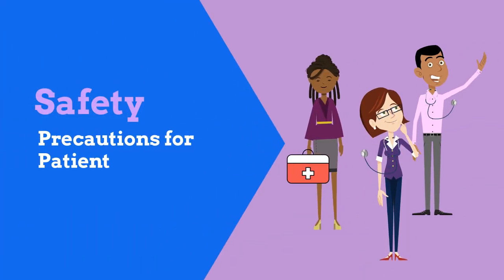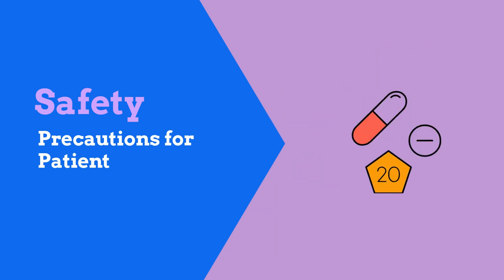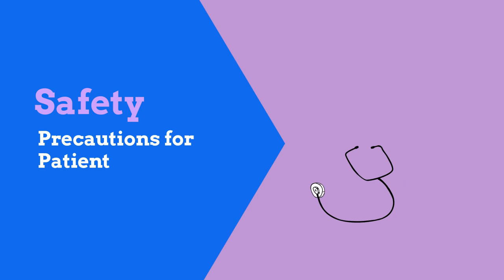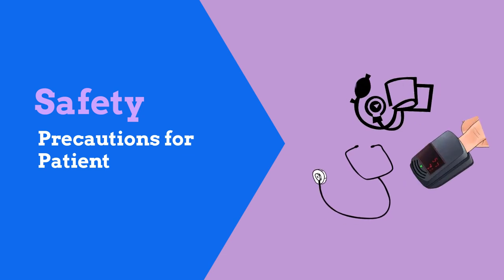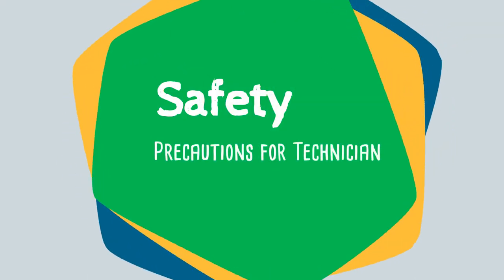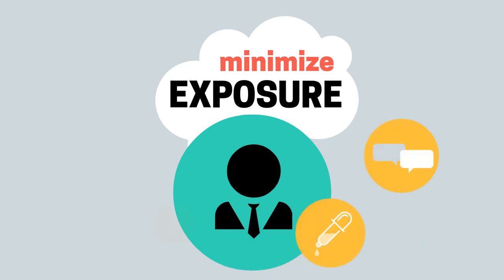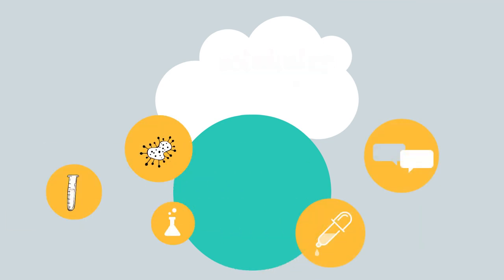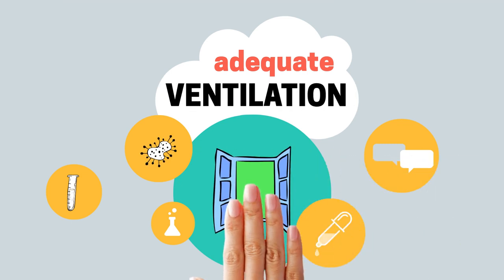For the safety of the patient, there should be trained staff close by in case of emergency. Medications to treat bronchospasm, a stethoscope, sphygmomanometer, and a pulse oximeter should also be available. To ensure technician safety, there should be minimal exposure, and the testing room should have adequate ventilation.